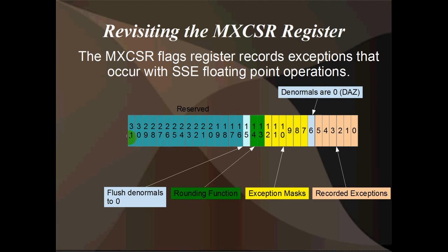It's 32 bits wide — I've drawn it out just here. That's bit 0 on the right, all the way through to bit 31 on the left. We've got 6 bits at the start for recorded exceptions, then a denormals-are-zero bit, then exception masks, the rounding function which should be familiar from the conversion instructions, and flush denormals to zero at bit number 15. The rest are reserved.